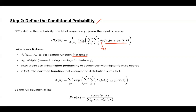We exponentiate the weighted sum of feature functions to convert it into a positive score, where higher feature scores represent higher probabilities. The partition function Z(X) sums over all possible label sequences Y', ensuring the total probability over all possible sequences equals 1.